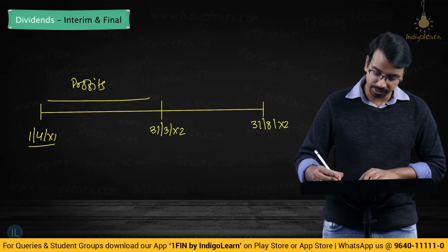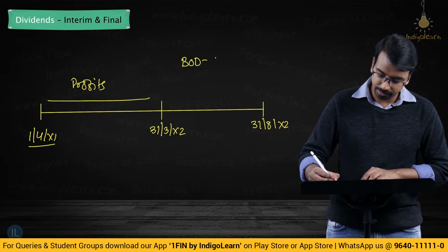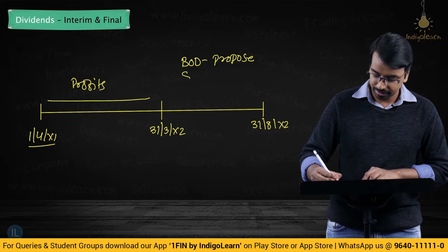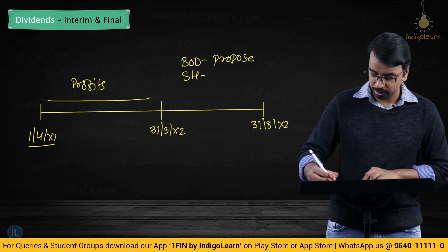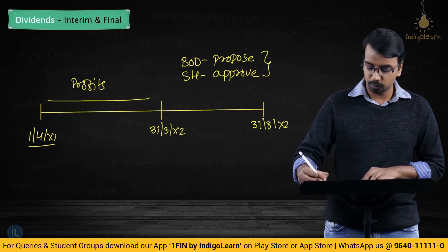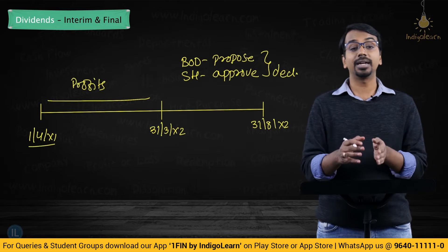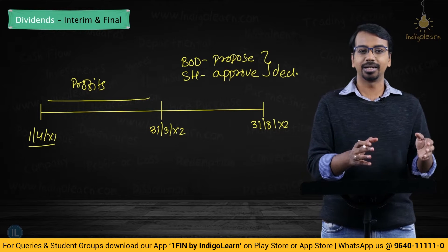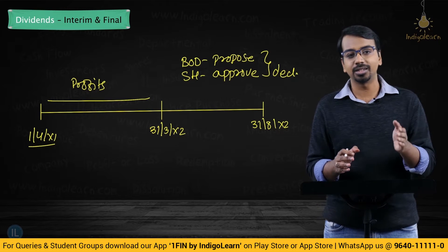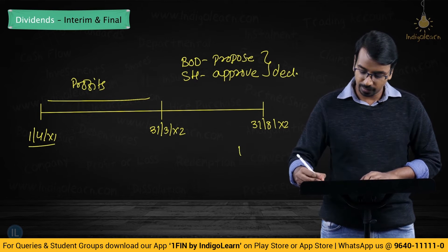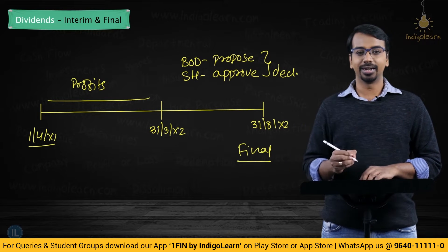Whenever an amount has to be paid as dividend, the board of directors propose the dividend, and shareholders approve the dividend. Once it is approved we call it a declaration of dividend. So if a dividend has been declared for a financial year after the financial year has been completed, we call it a final dividend.